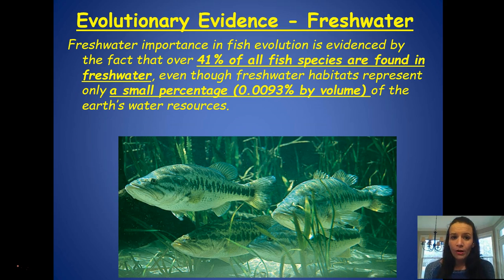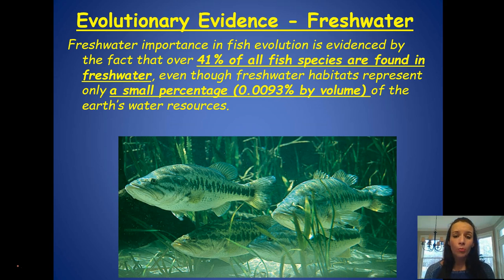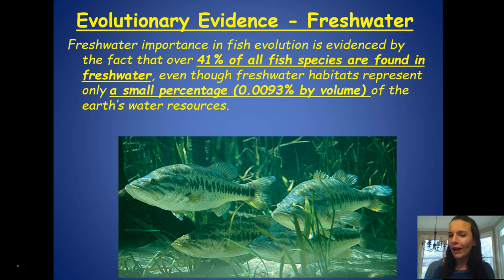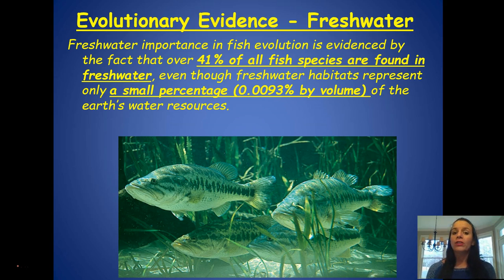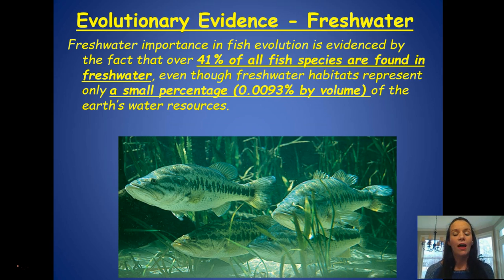The freshwater evolutionary evidence is important: 41% of all fish species are found in freshwater. Even though freshwater habitats make up a small fraction of the Earth's water — the majority is saltwater — the fact that 41% of species are in freshwater environments speaks volumes from an evolutionary standpoint.